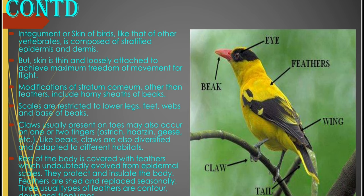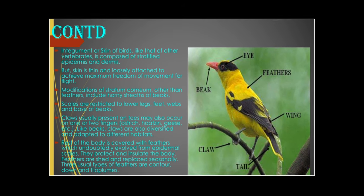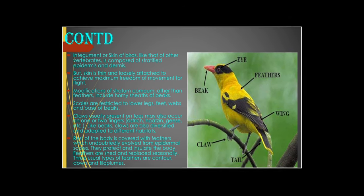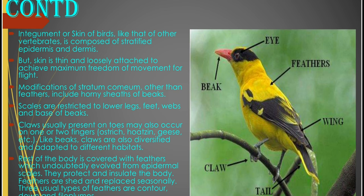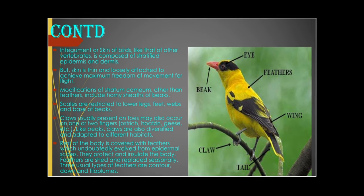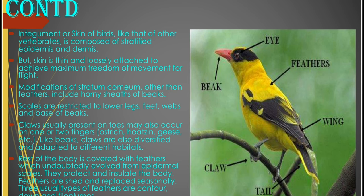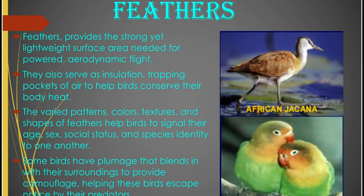The rest of the body of the bird is covered with feathers. It has been shown that feathers evolved from epidermal scales. The feathers protect and insulate the body. Feathers are shed and replaced seasonally. Three usual types of feathers are the contour feathers, the down feathers, and the filoplumes. Contour feathers give the bird their fine round shape. The down feathers are at the inferior aspect and the filoplumes are the hair-like feathers.